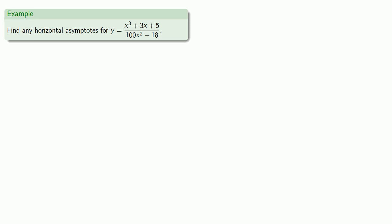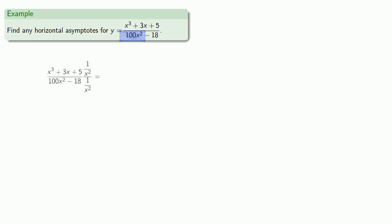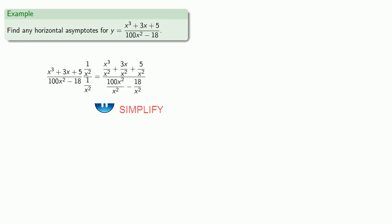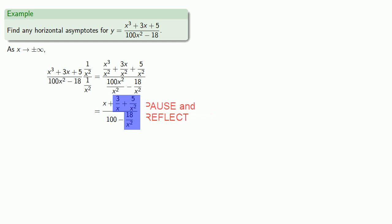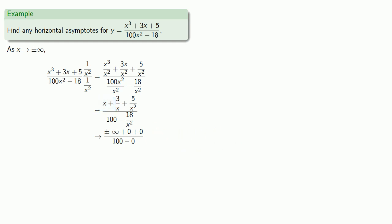Or, take something like this. Again, we divide by the highest power of x in the denominator, which is x squared, so we multiply by 1 over x squared and simplify. As x goes to plus or minus infinity, 3 over x, 5 over x squared, and 18 over x squared all go to 0, and 100 stays 100. But the numerator contains an x term that goes to plus or minus infinity, which means this whole expression goes to plus or minus infinity. So y goes to plus or minus infinity, and importantly, we observe that there are no horizontal asymptotes.